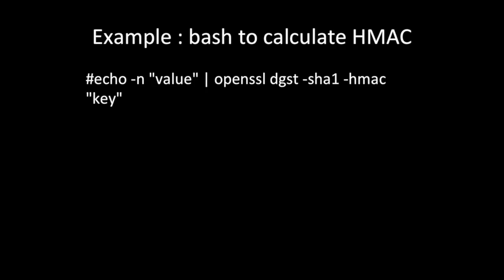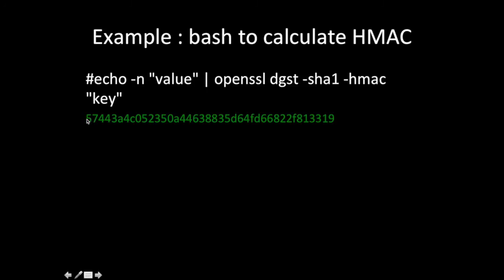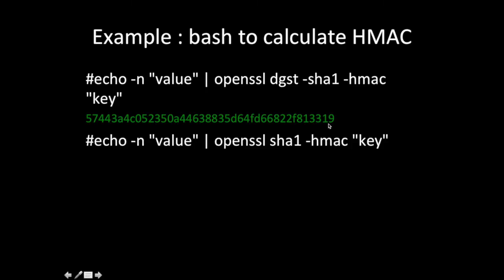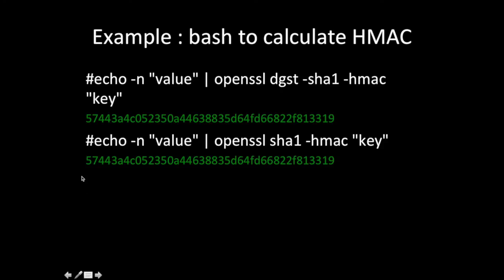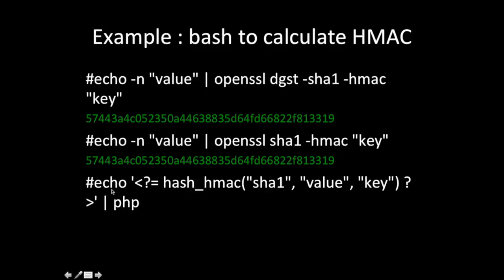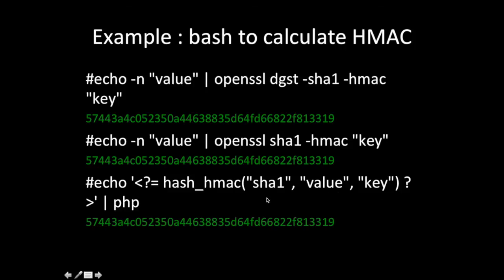There are examples of how to use HMAC in bash using OpenSSL or echo commands. OpenSSL provides the digest with '-sha' flag, specifying HMAC with a given key — for that value and key, the HMAC is produced. You can also use OpenSSL directly with SHA1, specifying HMAC with key and value to produce the same result. In PHP, you can use the hash_hmac() function, providing the algorithm (e.g., sha1), the value, and the key to produce the same HMAC value.